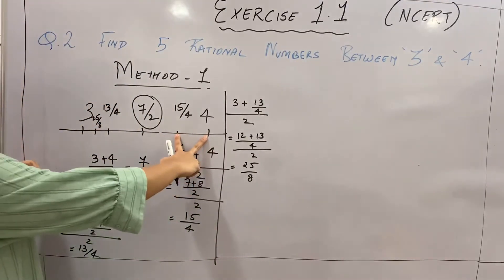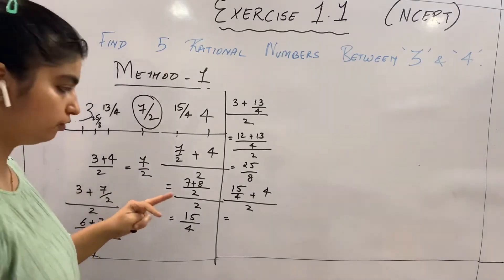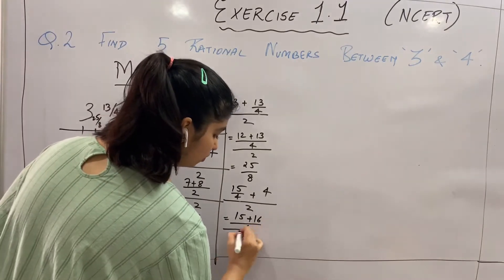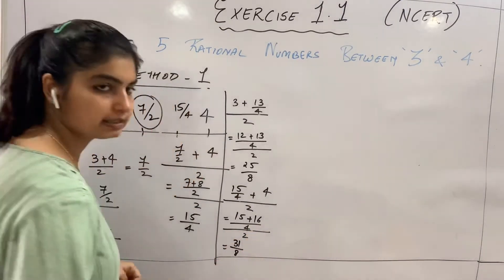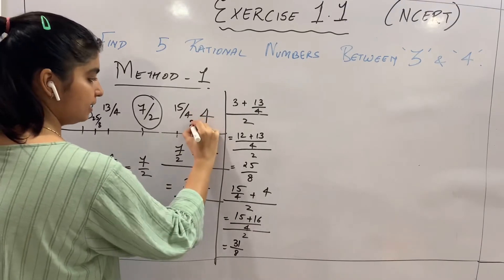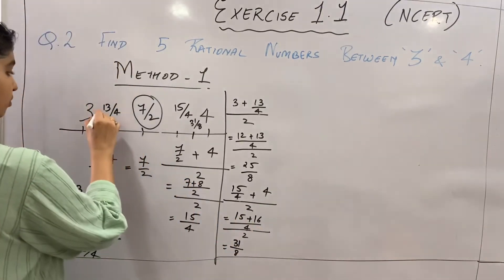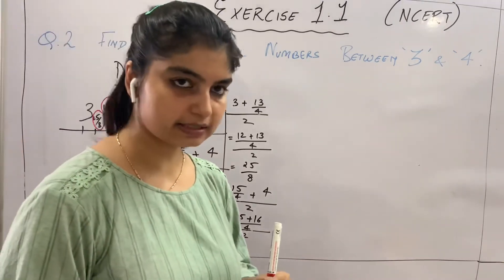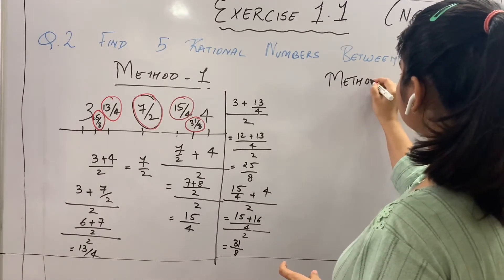Take average of 3 and 13/4: (3 + 13/4) / 2. LCM of 4: (12 + 13) / 4 divided by 2 = 25/8. Then take average of 15/4 and 4: (15/4 + 4) / 2. LCM of 4: (15 + 16) / 4 divided by 2 = 31/8. So the five rational numbers between 3 and 4 using Method 1 are: 7/2, 13/4, 15/4, 25/8, and 31/8.